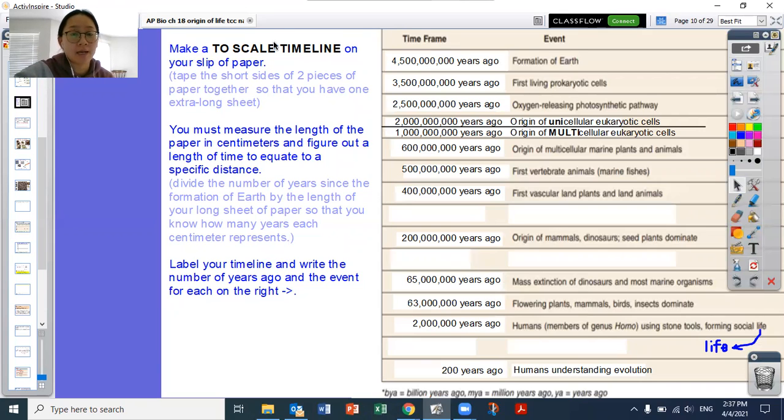So you're going to make a to scale timeline. And again, the reason why we want to make a to scale timeline is because you want to see how far apart these events happened from the start of the earth compared to now where we exist, and also relative to each other. And you must measure the length of the paper so that you can have this tool to help you divide out and see how many years one centimeter represents.